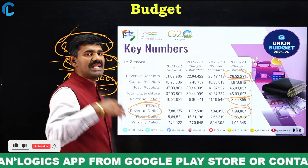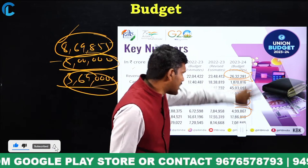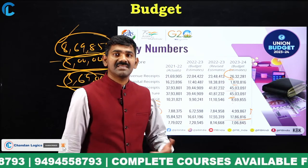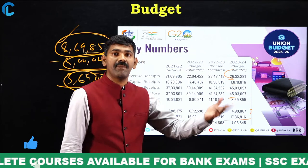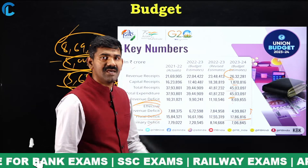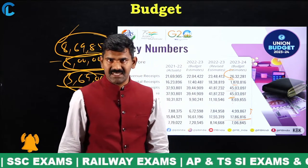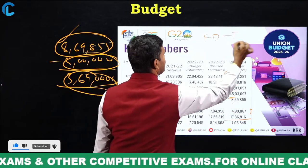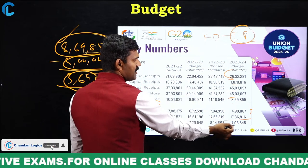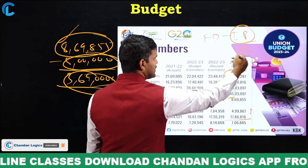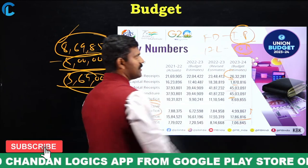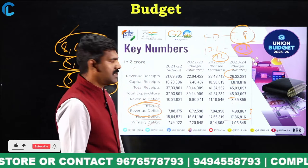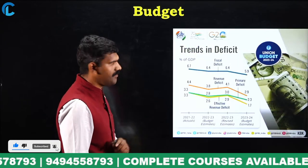Fiscal deficit is total government expenditure minus total government revenue. The fiscal deficit is 17 lakh crores, meaning the government is running short of 17 lakh crores and is borrowing that money from the market. Primary deficit is fiscal deficit minus interest payments. Out of the 17 lakh crores fiscal deficit, 10 lakh crores is interest payments, leaving a primary deficit of 7 lakh crores.